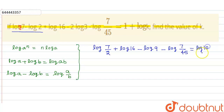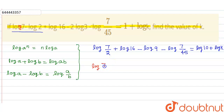The 1 on the right side can be written as log 10, because log of 10 to the base 10 equals 1. So the right side becomes log 10 plus log k. Now we apply the second property, combining log(7/2) plus log 16 as log(7 times 2 times 16).